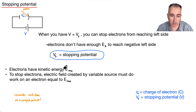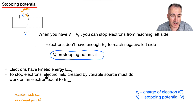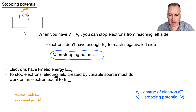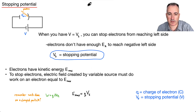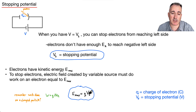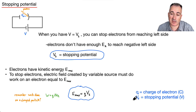The electrons have a kinetic energy Emax. To stop them, you need an electric field created by the variable source that does work on an electron equal to that maximum energy. From our data booklet: W equals Q times ΔVE. We replace W with Emax, and ΔVE with Vs, the stopping potential. So Emax equals Q times Vs. This means you can solve for stopping potential by doing Emax over Q. Remember that Q is the charge of the electron in coulombs, and Vs is the stopping potential measured in volts.